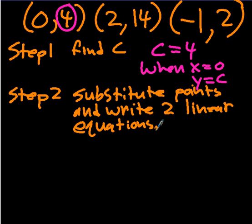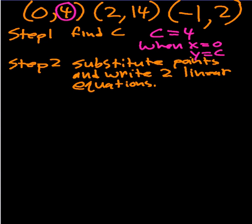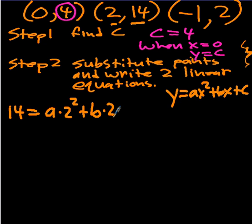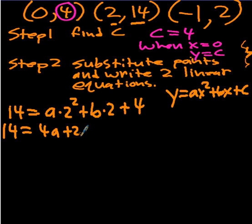The order that you do these two things in really doesn't matter. My equation is y equals ax squared plus bx plus C. So using the point (2, 14): 14 equals a times 2 squared plus b times 2 plus C, which I know to be 4. Simplifying: 14 equals 4a plus 2b plus 4. Subtract 4 from both sides: 10 equals 4a plus 2b.